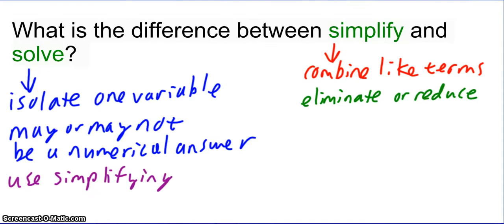Okay, so some things that you may or may not have come up with is when we talk about simplifying, we're just really looking to combine like terms, possibly eliminate or reduce things. We're not trying to get a specific answer, whereas when we talk about solving, we are. We're trying to isolate some variable. We may or may not get a numerical answer. It depends on what the original equation involved. We are going to use our simplifying techniques within solving.